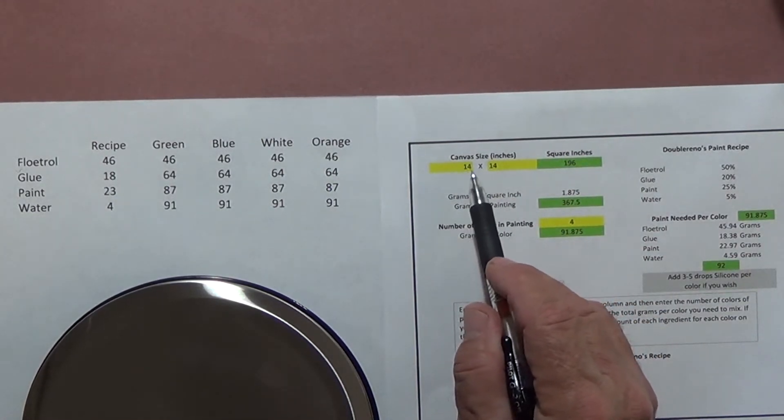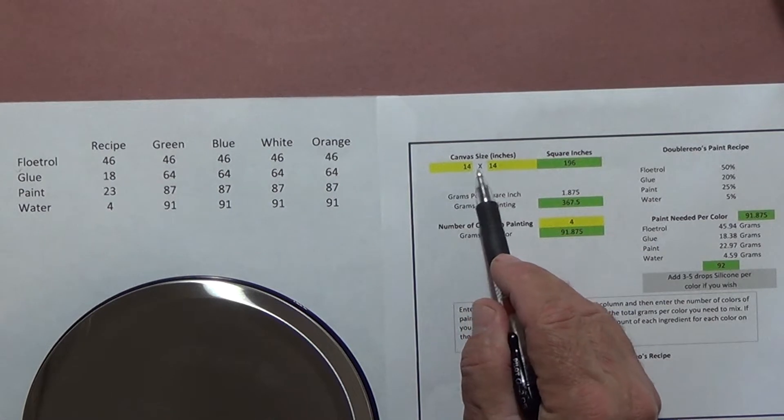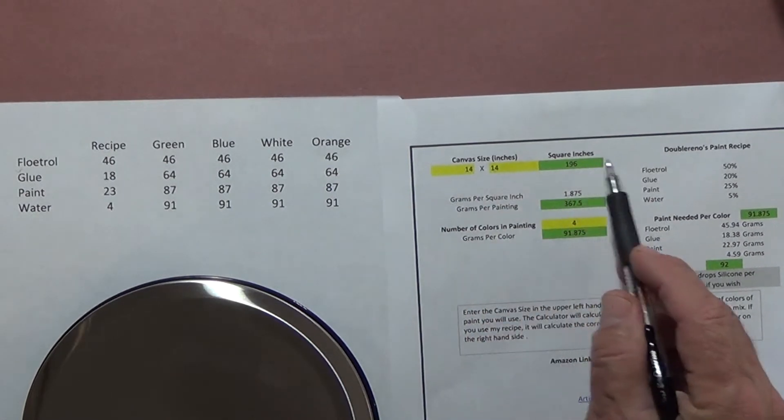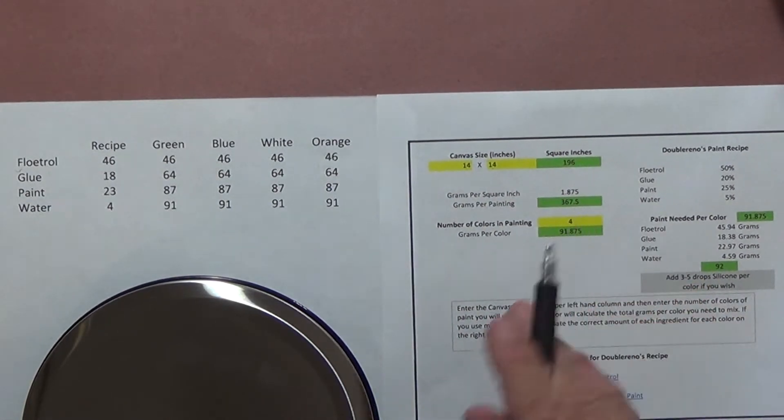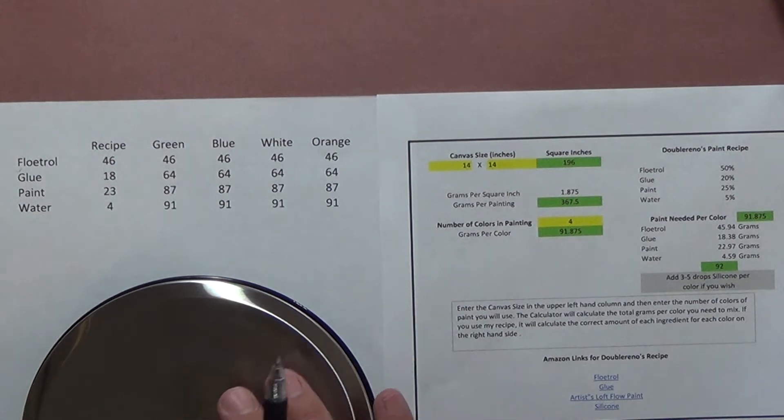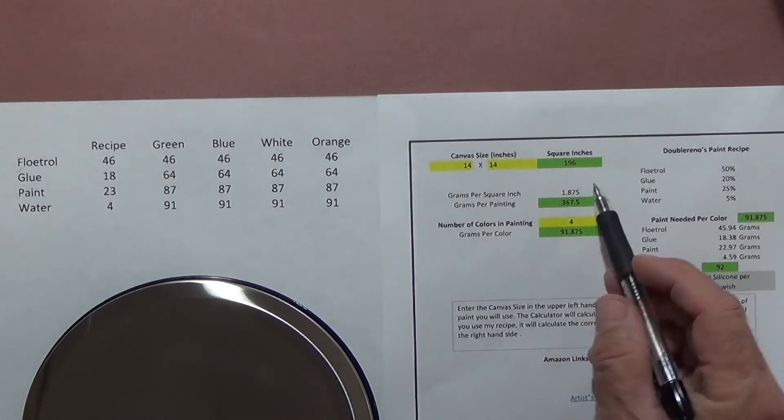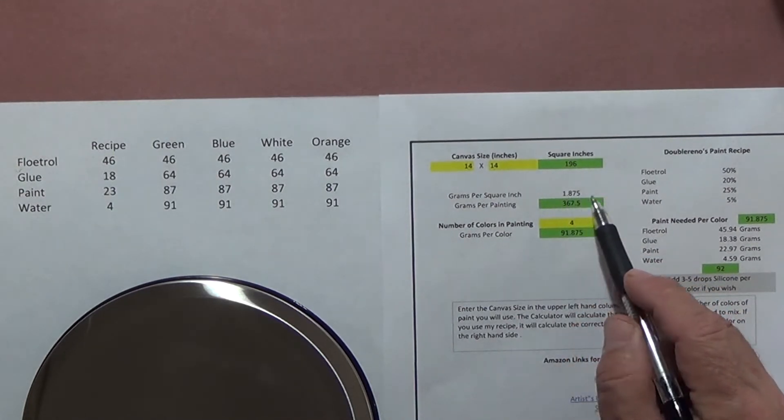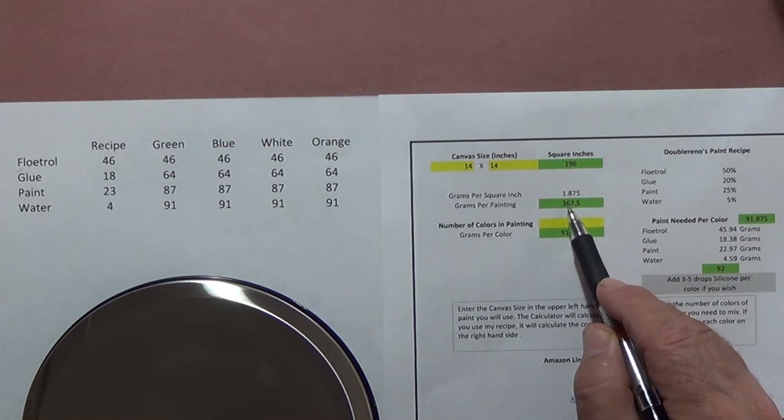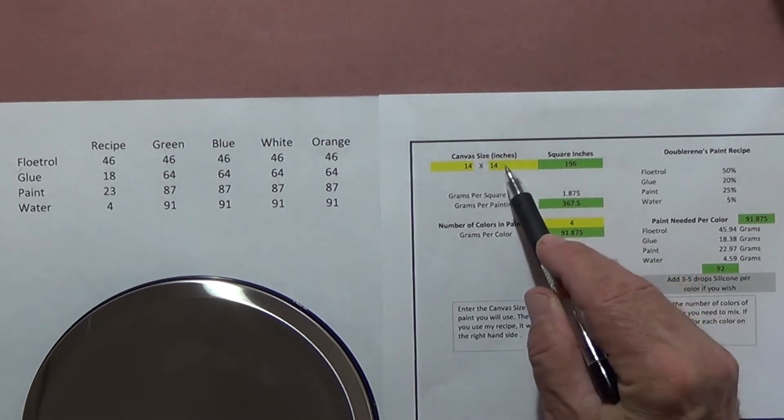All you do is you come in and you put in the size of your canvas. The paint that I'm mixing up for this video I'm going to use in the pour painting after I get done. My canvas is going to be 14 inch by 14 inch, so it gives you total square inches. Everything I do is by weight, it's done by grams, and I weigh it on a scale. That way I can be consistent with my recipe and know I'll get pretty close to the same thing every time.